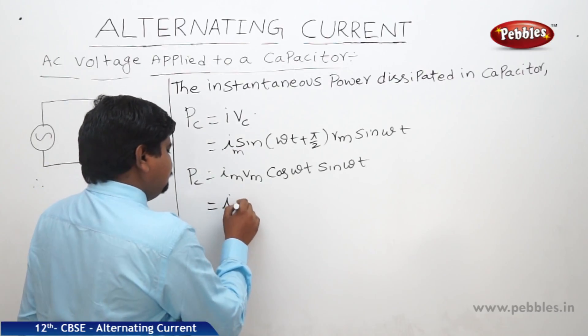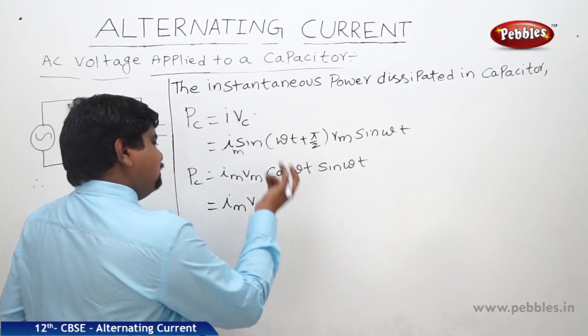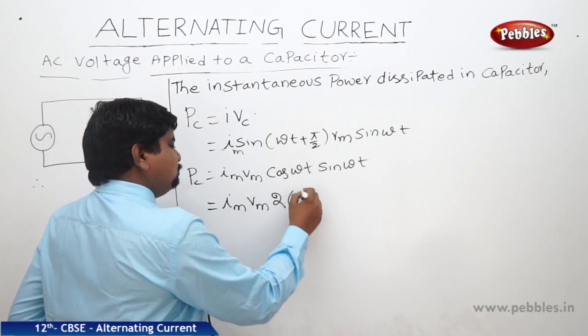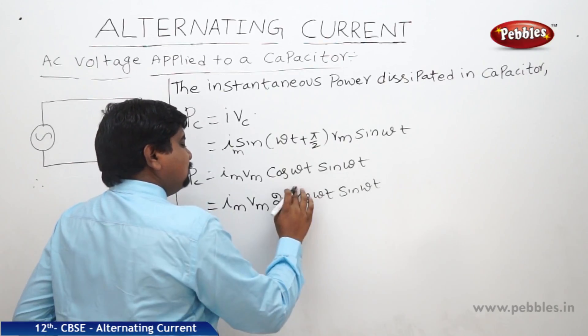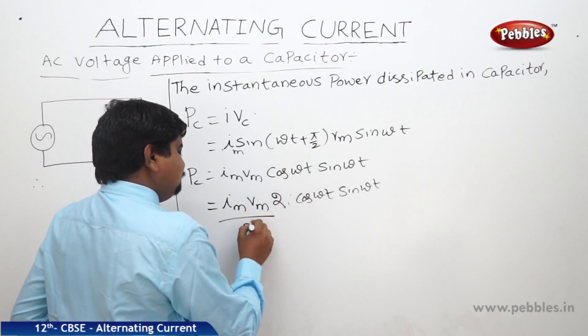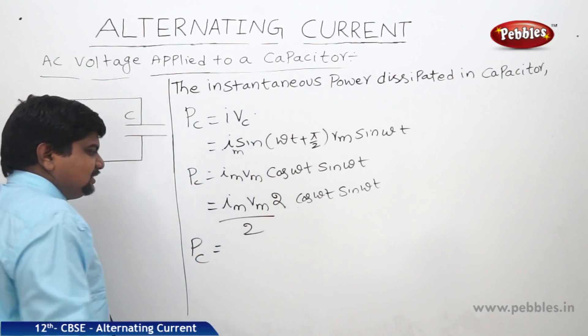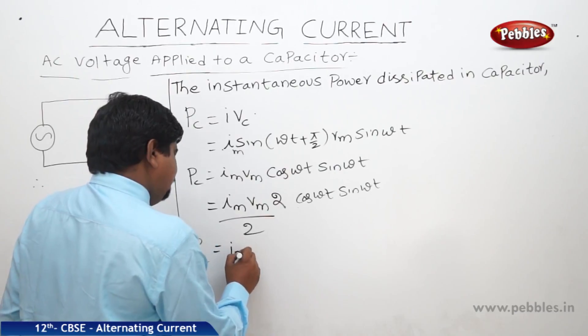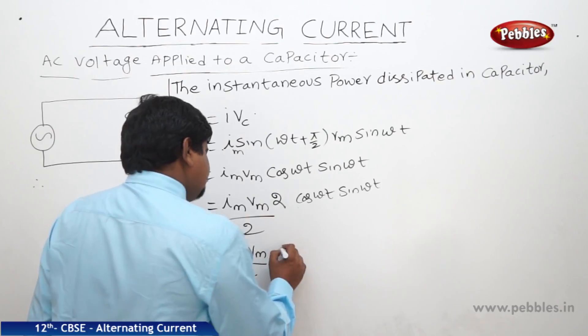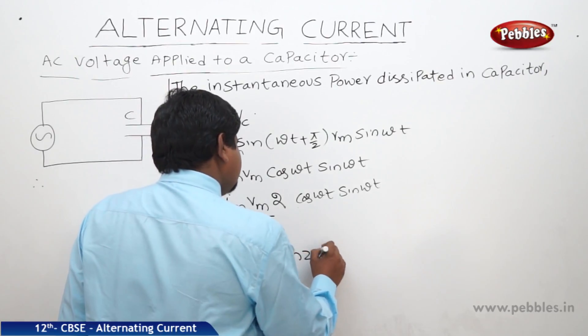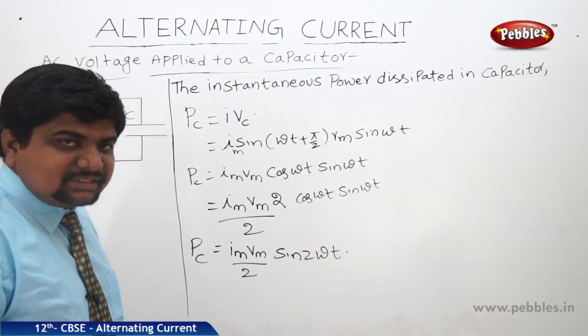Therefore Im Vm cos(ωt) into sine(ωt). We are multiplying with 2, 2 cos(ωt) sine(ωt) dividing with 2. Therefore we can write PC equals Im Vm by 2 into 2 cos(ωt) sine(ωt), which is nothing but sine(2ωt). This is the expression for instantaneous power dissipated in capacitor.